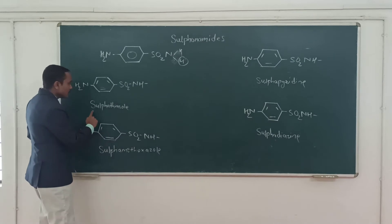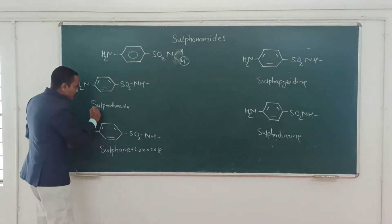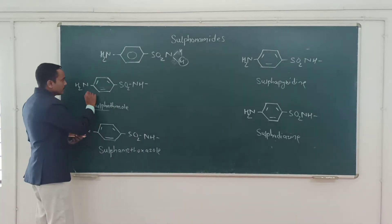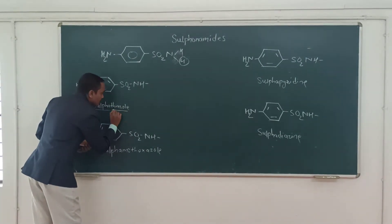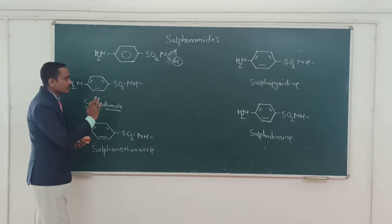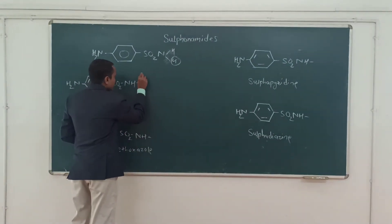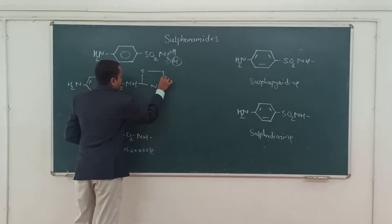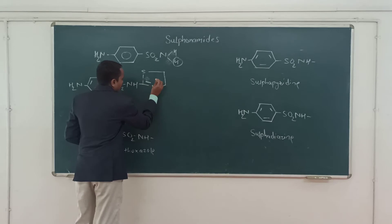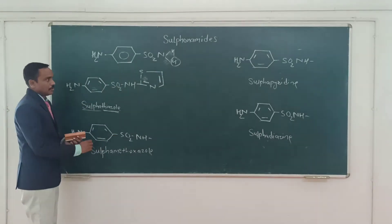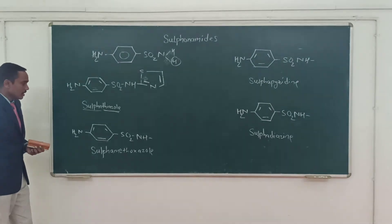First is sulfathiazole. The 'sulfa' part indicates the presence of the sulfonamide molecule, as you can see here. And the 'thiazole' is the other part. We just have to substitute the thiazole as a five-membered ring over here. So likewise, this is sulfathiazole.